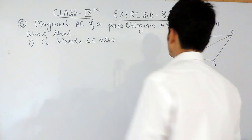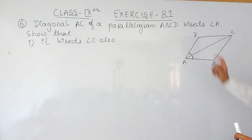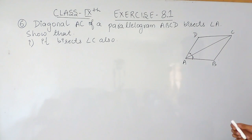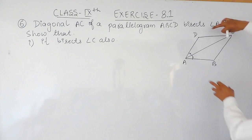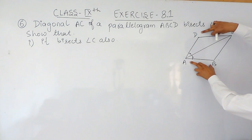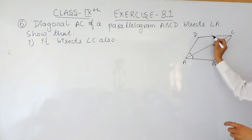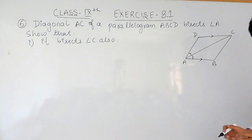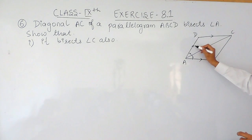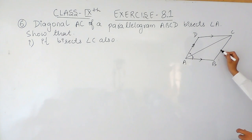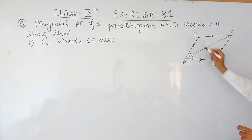Now what does that mean? This ABCD is a parallelogram. A parallelogram is basically a four-sided closed figure in which its opposite sides are parallel and equal. This AB is equal to DC and AB is parallel to DC. Similarly, this side must also be parallel to this side and this side must be equal to this side.